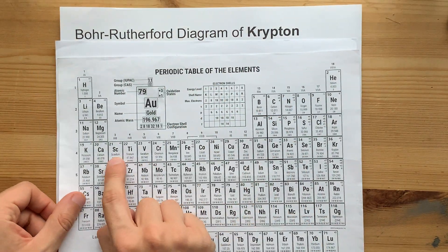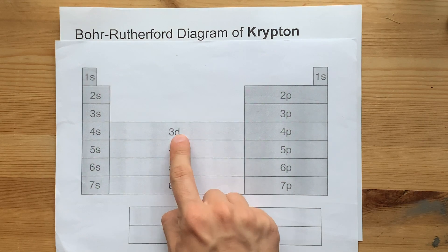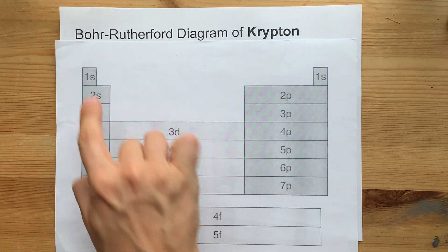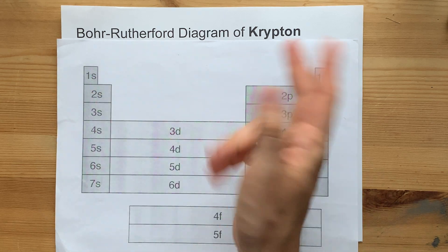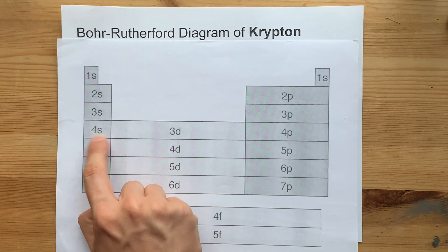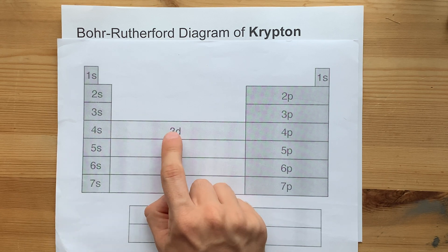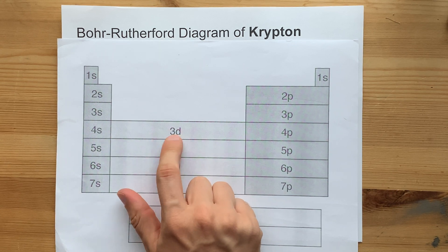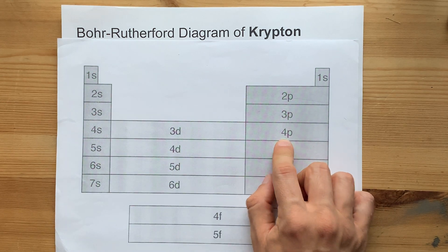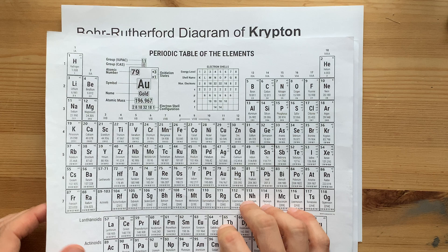By the time you get to scandium and beyond, you have to think about where the electrons are going. The electrons in the first row go in the first shell, second row second shell, third row third shell. These two electrons go to the fourth shell, and then you're going to have to backtrack and add electrons to the third before continuing with the fourth. So it's a little complicated, but we'll get through it.